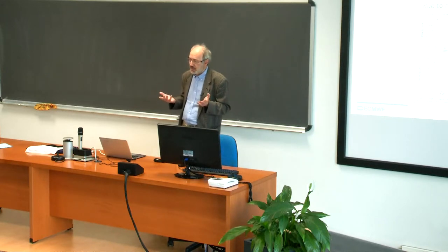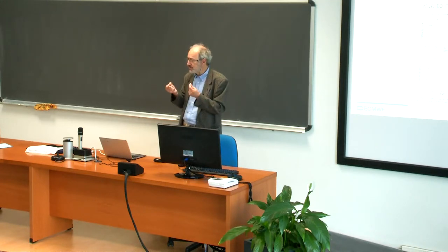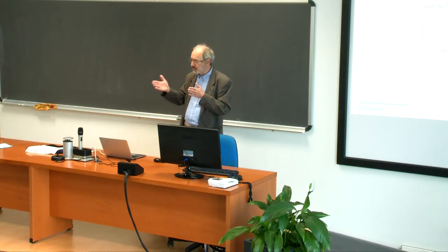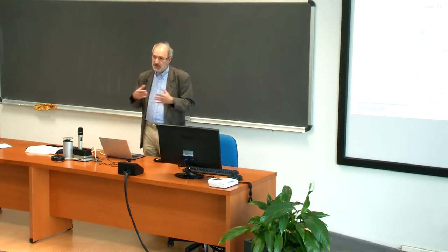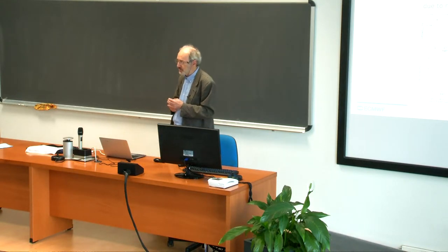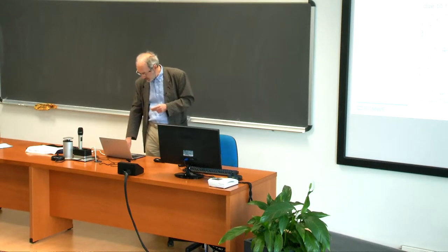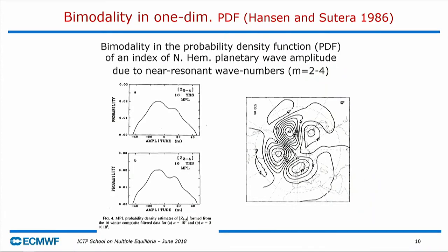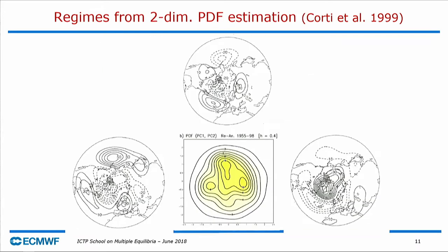This was the first attempt, using the simplest method — condensing everything into one index. If there are multiple regimes, the probability density function of this index should have peaks corresponding to the different regimes and minima in between. However, when you condense everything into one single number, you have to make many assumptions and discard many degrees of freedom. So people soon started thinking about looking for regimes in a way where you can see more structure — moving from one to two degrees of freedom.